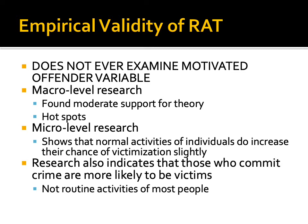As far as the empirical validity of routine activities theory, the one major issue is that the motivated offender variable is never examined — it just assumes that people want to commit crime. That means if there is a suitable target and no one there, you will commit crime. Everybody's a motivated offender if things work out properly. But does that really explain why crime happens? Probably not. It doesn't really show what differentiates people, because not everyone is going to commit crime. For macro-level research, we've found moderate support, specifically in the form of hotspots. But micro-level research shows that normal activities of individuals only increase their chance of victimization very slightly, and research typically indicates that those who commit crime are more likely to be victims.